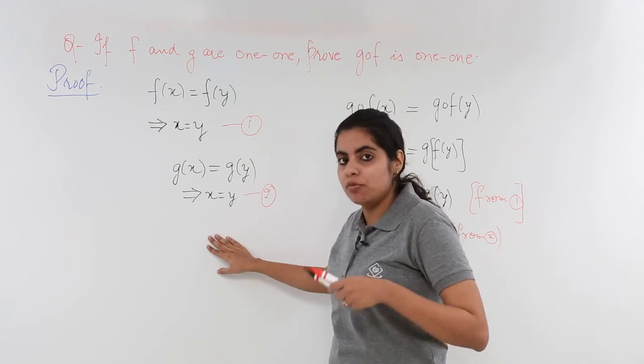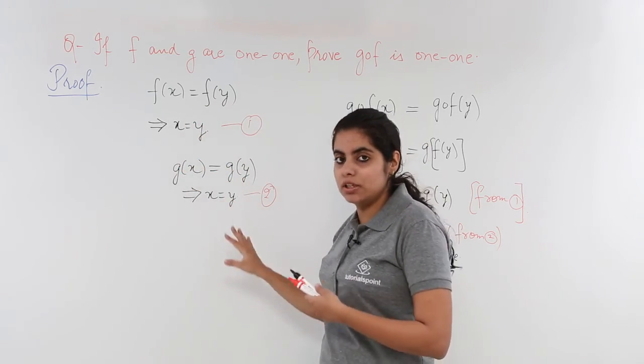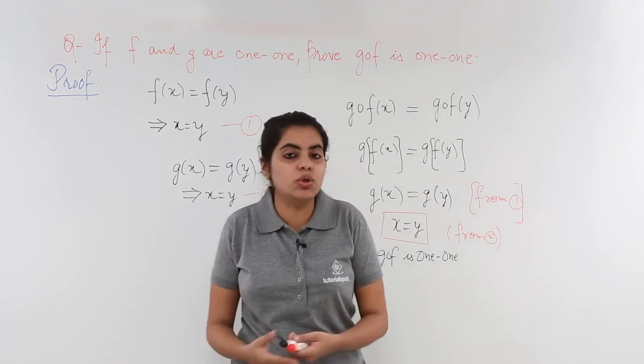So what we did was we used the definition of one-one functions: f(x) and f(y) put equal, x is equal to y. Similarly, g(x) and g(y) put equal, x is equal to y. And the rest we did by computing gof, solving equation number one and two.